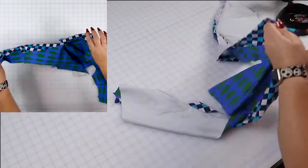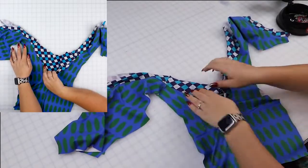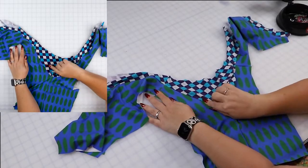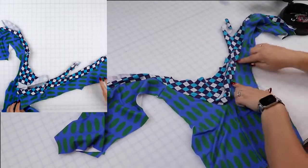The facing is understitched. So from the outside, you can see the stitch line right here. It's only on the facing, not on the main. And that goes all the way to the other side.